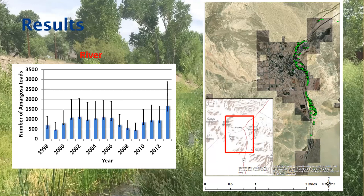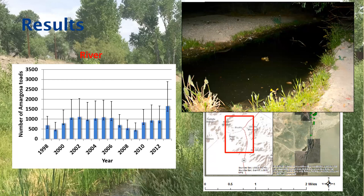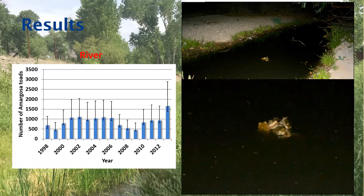The Beatty River area around the town of Beatty is the most robust population, typically having over 1,000 toads just within a surveyed section of river. Since the Amargosa toad is essentially silent, the only way to find them at night is with a headlamp. Kevin once came around a bend and heard loud commotion — a large breeding ball of males, which is a rare sight in the valley.